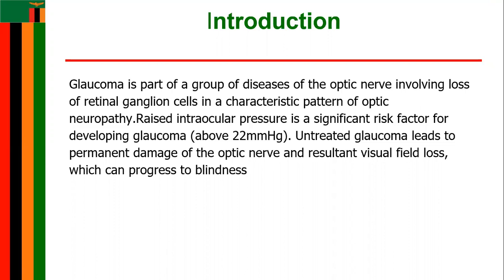Glaucoma involves loss of retinal ganglion cells in a characteristic pattern of optic neuropathy. When the optic nerves are damaged, the retinal ganglion cells fail to convert signals from the external environment — light waves into nerve signals — and send them to the brain. There is a significant risk factor for developing glaucoma when the intraocular pressure increases above 22 millimeters of mercury. Untreated glaucoma leads to permanent damage of the optic nerve and resultant visual field loss, which can even progress to blindness.